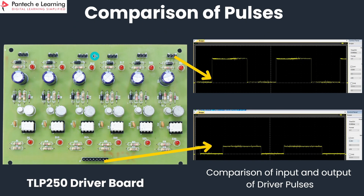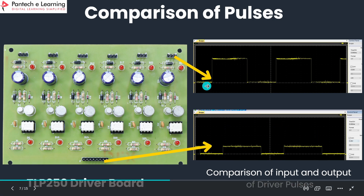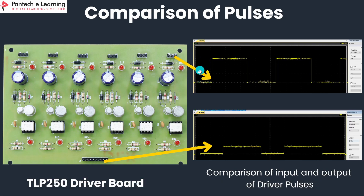This is the comparison of the pulse which is given by Arduino and which is given to power devices like MOSFET. This is the pulse generated by Arduino — you can see it is around 5 volt. And this is the pulse which is given to MOSFET — it is around 15 volt.